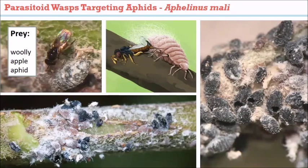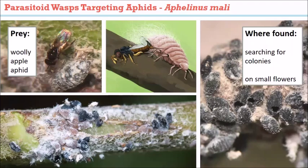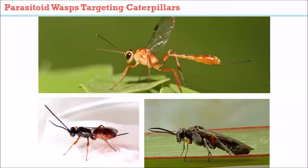Aphelinus mali is a very important parasitoid of the woolly apple aphid, which can be a serious pest. It won't eliminate the population entirely, but you know you have it when you start seeing black mummies within the woolly apple aphid colony. All these parasitoid wasps also need pollen and nectar to survive as adults, which helps bring them into the orchard.